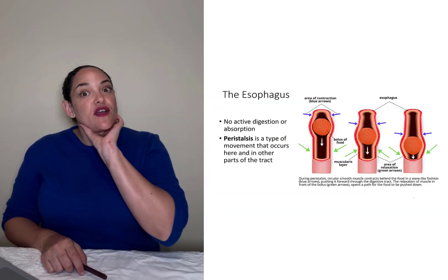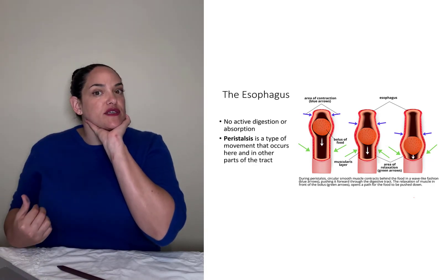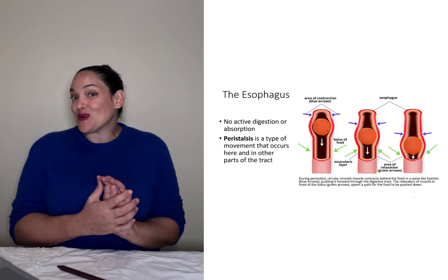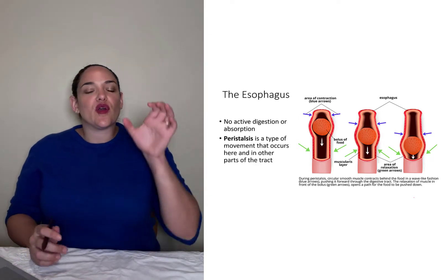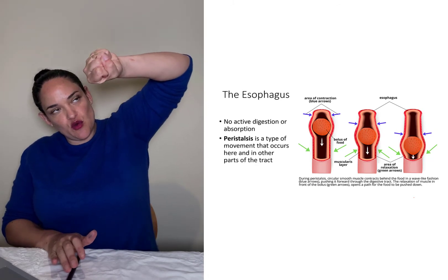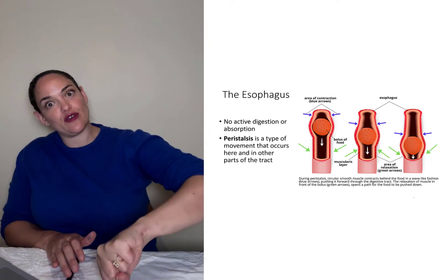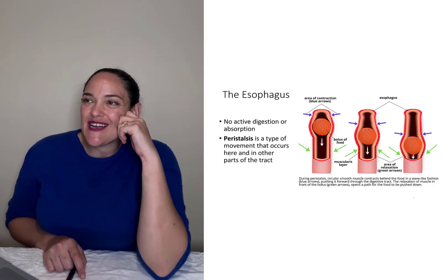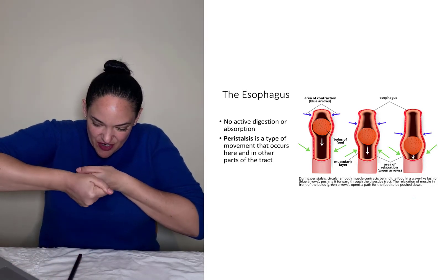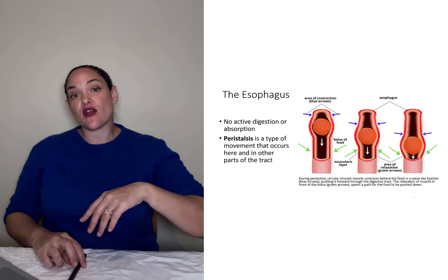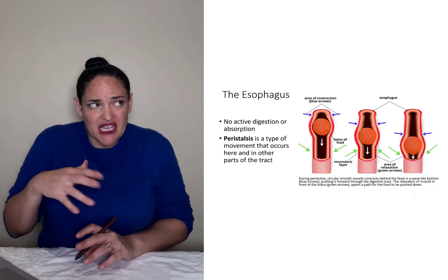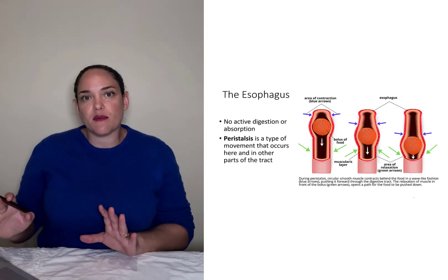Our pharynx is a conduit towards either the trachea anteriorly or the esophagus posteriorly — we want food to go into the esophagus. In the esophagus, peristalsis — circular smooth muscle contracting behind the food and pushing it down — is really important. Think of it like squeezing toothpaste from the back of the tube. Beyond peristalsis, there is minimal digestion occurring in the esophagus.